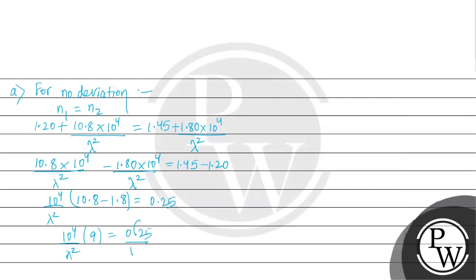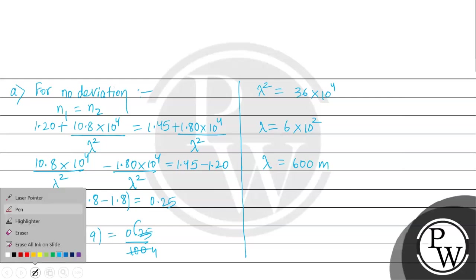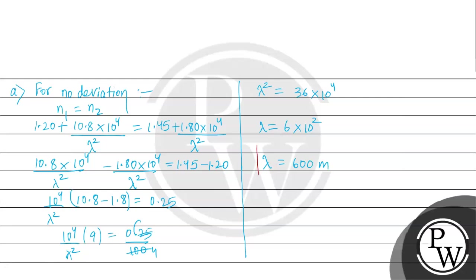Continuing: 10^4 divided by lambda squared equals 0.25 divided by 9. So lambda squared equals 4 times 9 times 10^4, which is 36 times 10^4. Therefore lambda equals 6 times 10^2, which equals 600 nm. This is the answer for Part 1: lambda naught equals 600 nm.